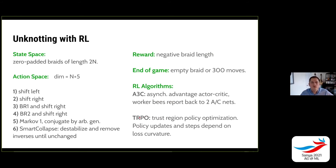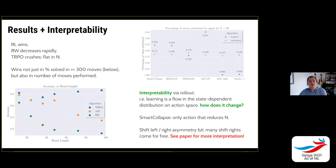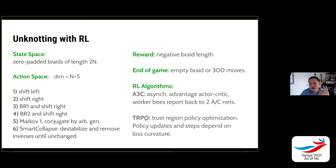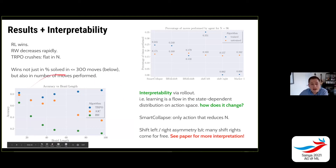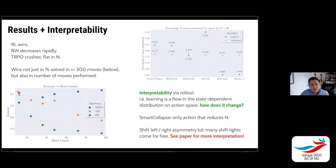There are a couple of different RL algorithms we use; trust region policy optimization does much better than the others. We feed unknots to these agents and let them train themselves to unknot intelligently. We compare two reinforcement learning algorithms against a random walker, which samples actions from a uniform prior on action space. We study accuracy versus braid length — accuracy means what percentage of unknots were successfully unknotted.